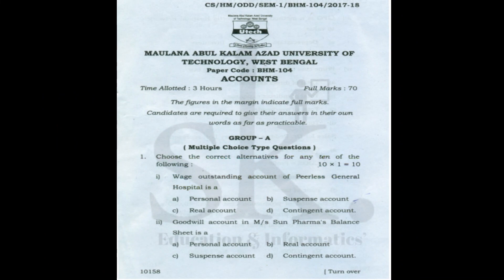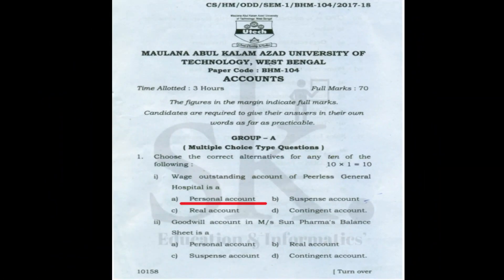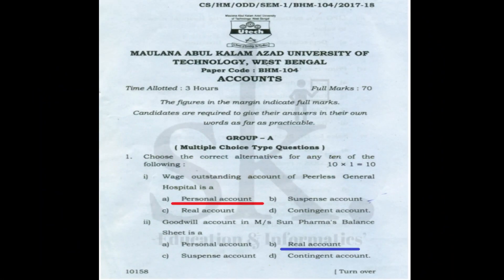Moving to the 2017 question paper: question number one — wages outstanding account of Peerless General Hospital is basically a part of personal account, so the correct answer is A. Question number two — goodwill account of a pharmacy balance sheet: goodwill is an asset and is part of a real account.